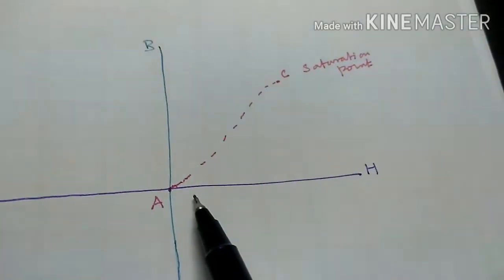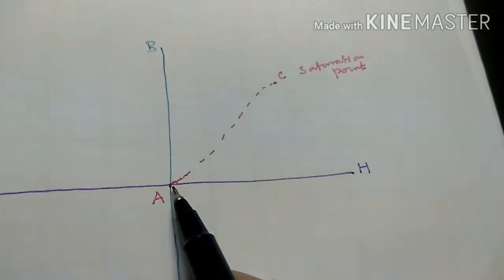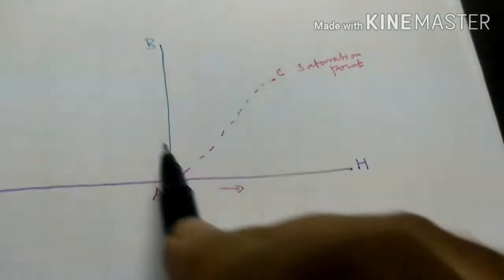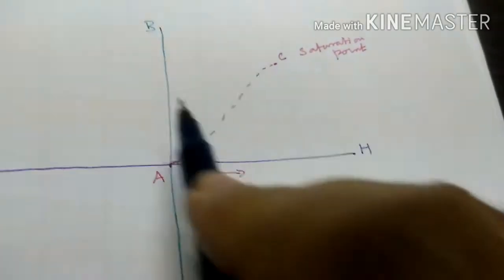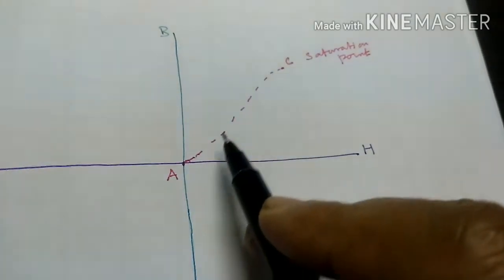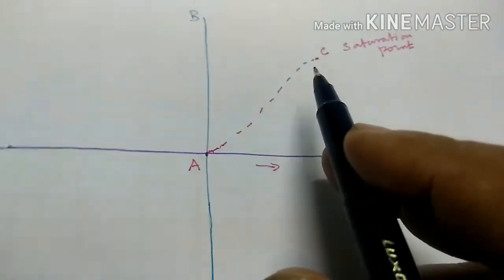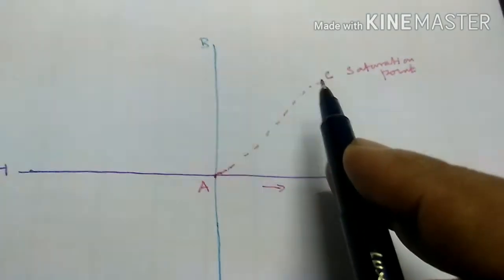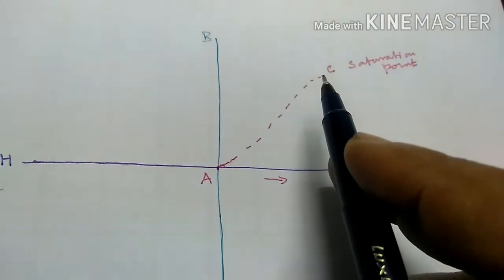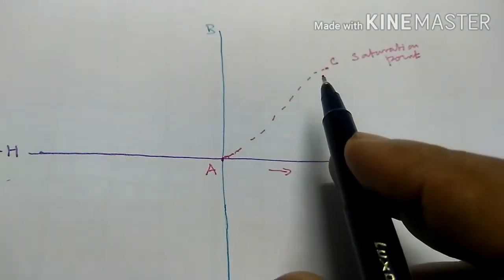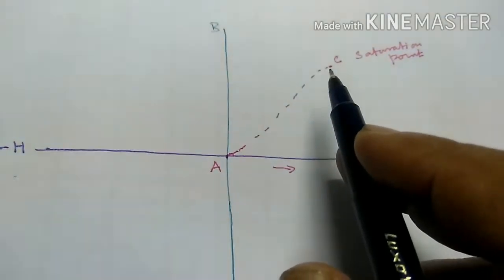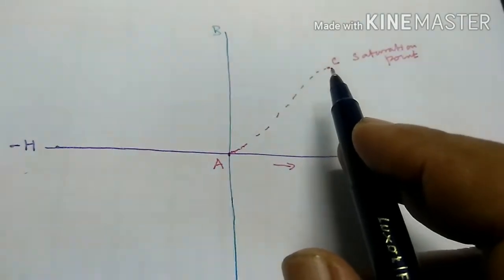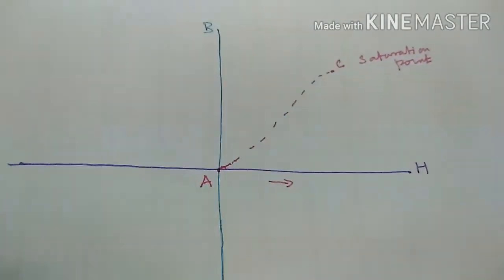When iron is magnetized by increasing the magnetizing field in the increasing direction, we increase the magnetic induction, then trace along the path A to C direction and reach the saturation point. The material reaches the maximum magnetic induction, and that point is called the saturation point.